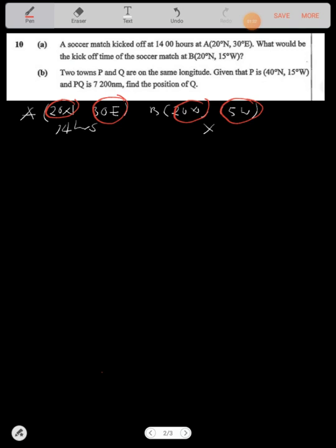First we need to find the difference in longitude. So since these two places are in different hemispheres, we're going to add the longitudes. So you add the longitudes, which is 30 plus 15. This will give you 45 degrees. In different hemispheres, that's why we're adding.